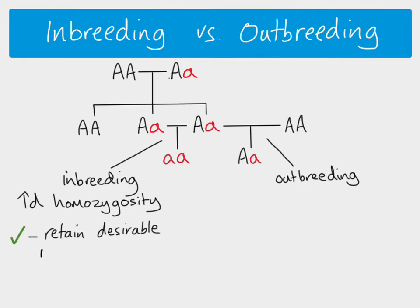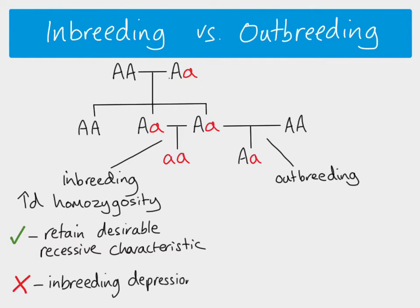This could be a good thing, because if there is a characteristic which is recessive that has arisen by chance mutation in that particular family, then by inbreeding — by continuing to breed closely related individuals — you are likely to retain that desirable characteristic. However, because a lot of the time recessive characteristics are disadvantageous, you get something called inbreeding depression. Diseases caused by recessive alleles are more common than diseases caused by dominant alleles, so increasing homozygosity increases the chance of recessive characteristics being expressed, and many of those will have negative effects.